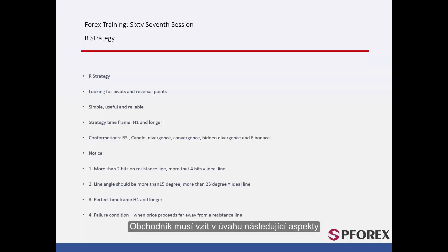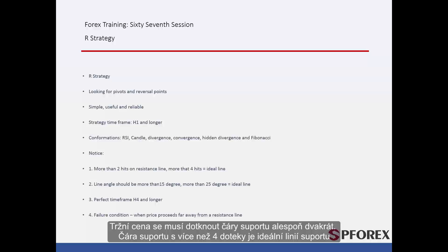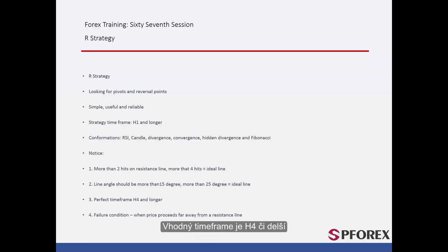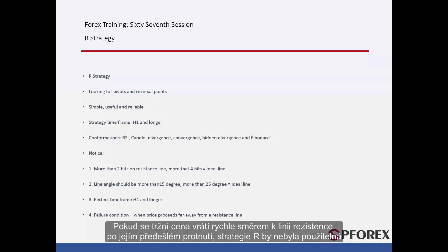A trader must consider the following aspects. Market price must touch the support line at least twice, and a support line with more than 4 hits is ideal. A suitable support line has an angle greater than 15 degrees, while it would be ideal if the angle was over 25 degrees. Appropriate timeframes are H4 and longer. If the market price returns considerably towards the resistance line after crossing it, then the R strategy would become ineffective.